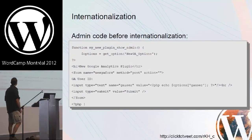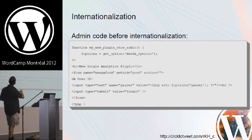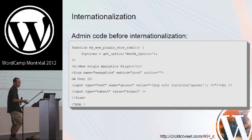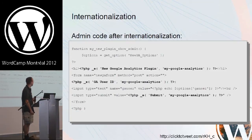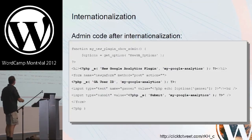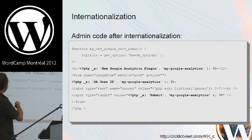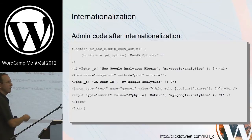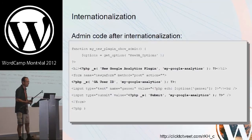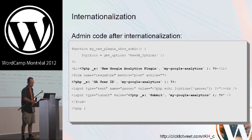Looking at a simple admin page code — what it would look like before internationalization, you'd have a function showing a header and drawing a form with plain text strings. After internationalization, any text string you had before would be wrapped in a bit of PHP code using the _e() function — your original string plus a reference to your text domain. It is a little extra effort, but in the end it can really open up your plugin to be translated into many different languages.